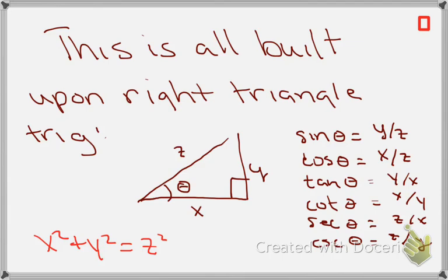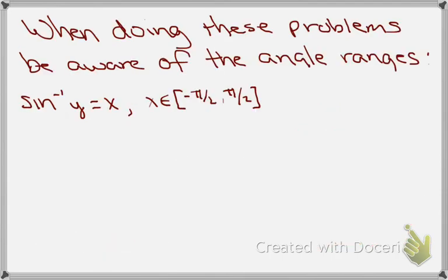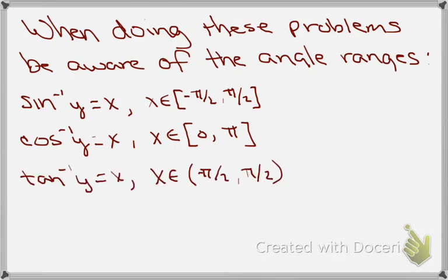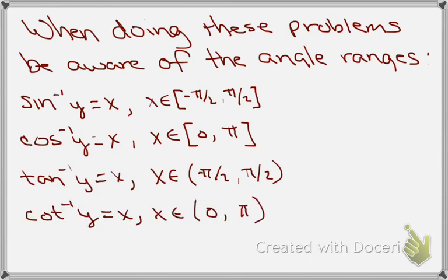If you know two of the sides you can always find the third. When doing these problems, be aware of the angle ranges. For sine inverse of y, the angle is always between minus pi over 2 and pi over 2, including endpoints. For cosine inverse of y, the angle is between 0 and pi, including endpoints. For tangent inverse of y, the angle is between minus pi over 2 and pi over 2, but endpoints are not included. For cotangent inverse, the angle is between 0 and pi, endpoints not included.